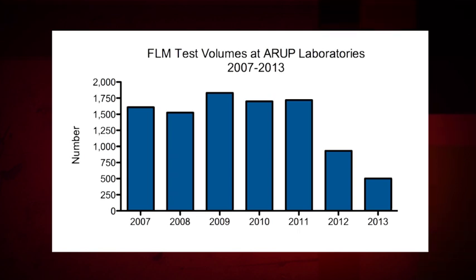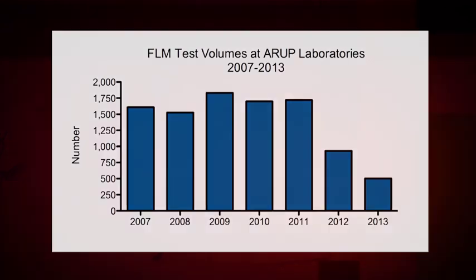Most importantly, there are several lines of evidence to support a decrease in fetal lung maturity test utilization. In its 2008 Practice Bulletin on Fetal Lung Maturity Testing, the American College of Obstetricians and Gynecologists recommended that FLM testing only be performed to demonstrate pulmonary maturity before a scheduled delivery at less than 39 weeks of gestation. However, the same group strongly discourages the practice of scheduled delivery before 39 weeks of gestation unless it is justified by a medical or obstetric complication.